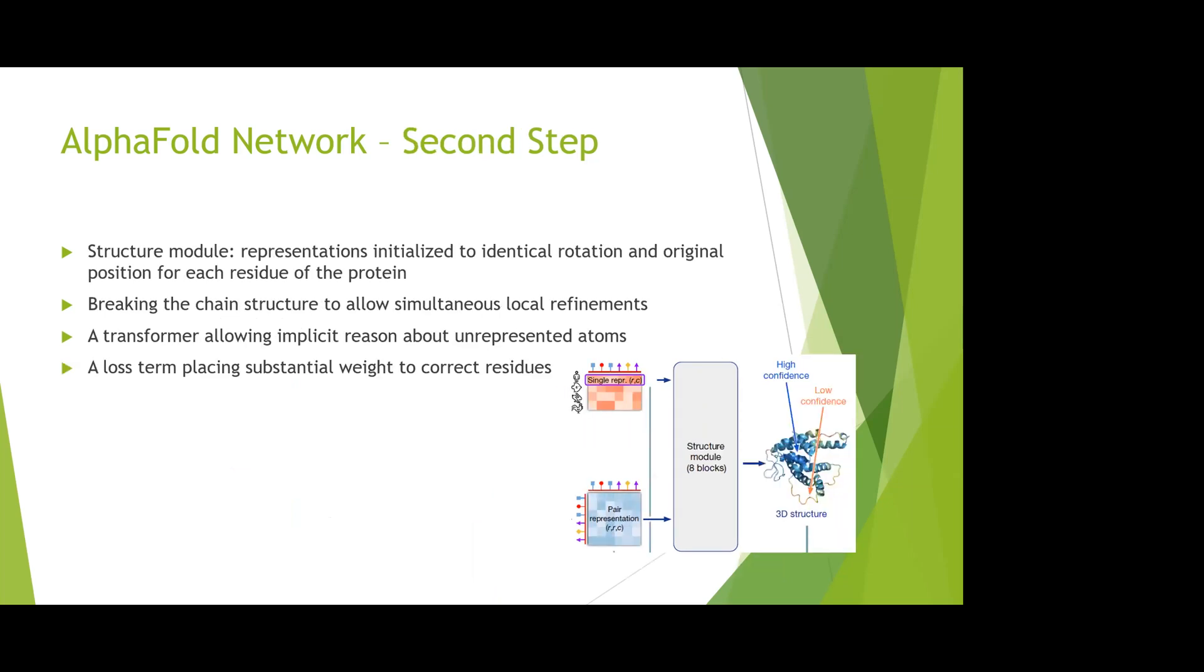The second step is the structure module. It takes the representations, the MSA representation and the pair representation from the Evoformer block, as input and outputs the 3D protein structure. The main blocks in the structure module are transformers, which can allow implicit reasoning between the atoms in the amino acid sequences.